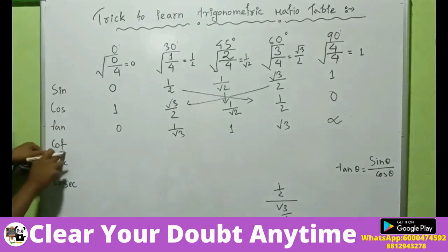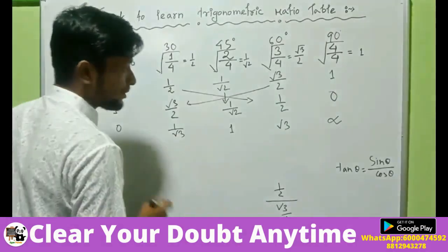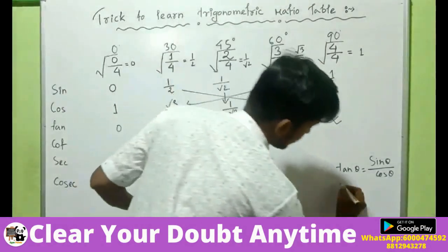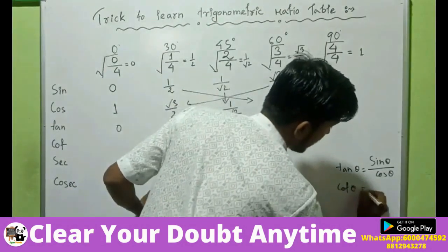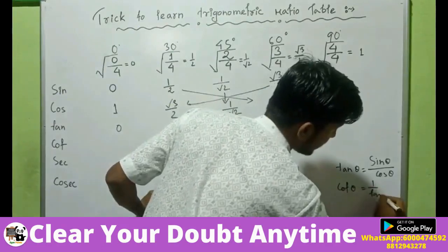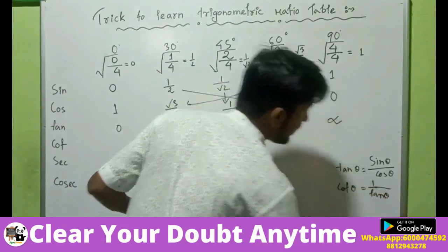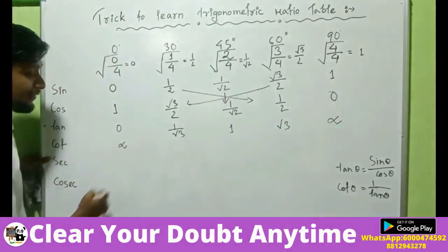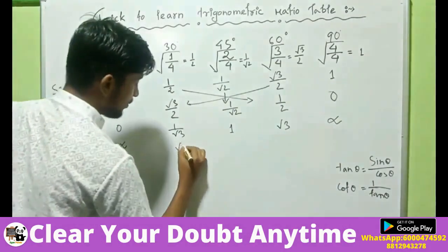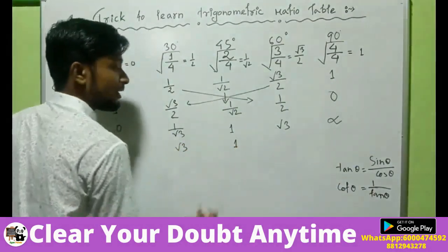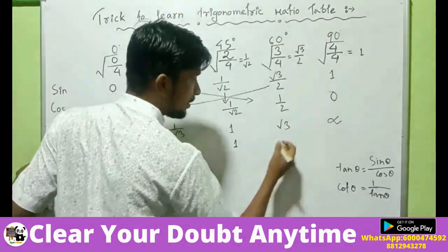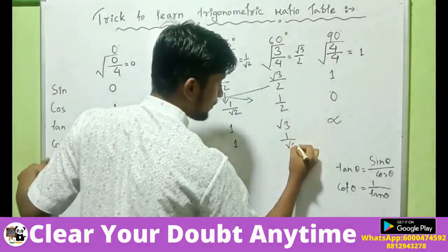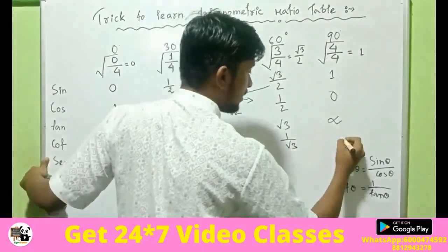What about cot? Cot means the reciprocal of tan: cot theta equals 1 by tan theta. So it will be infinite, then root 3, then 1 by 1 which is 1, then 1 by root 3, and here it will be 0.